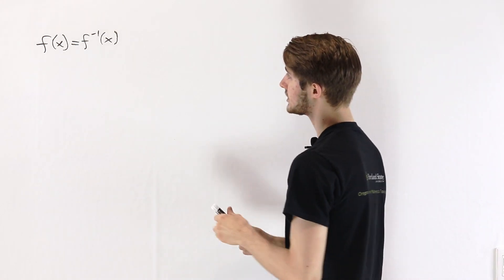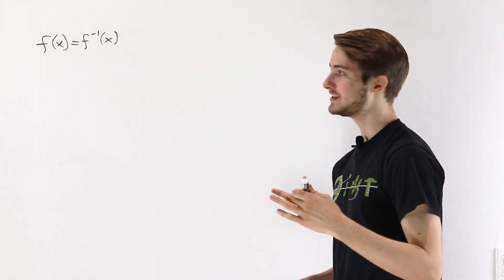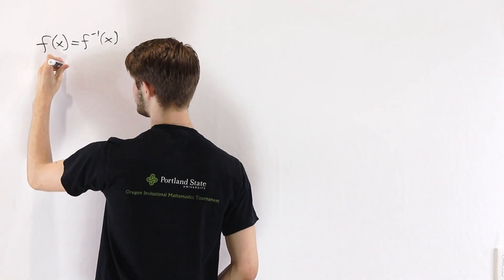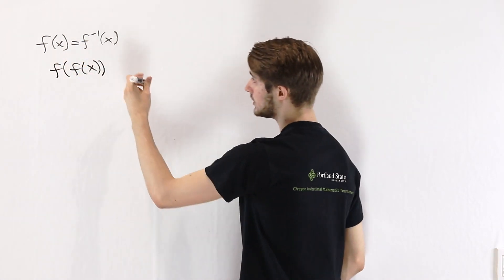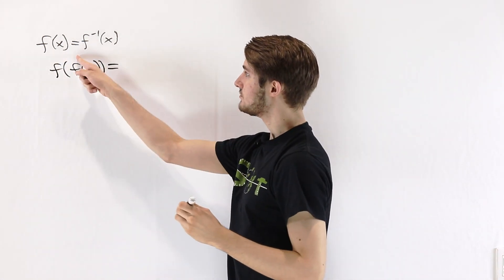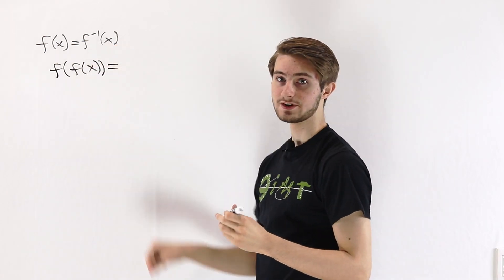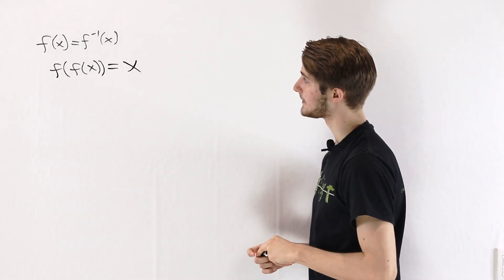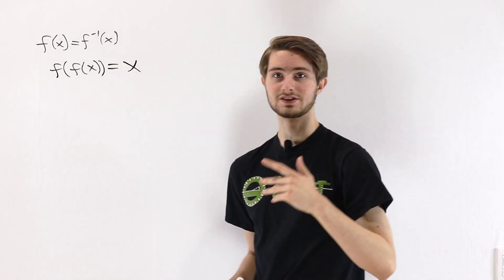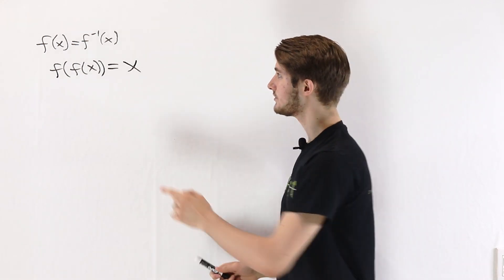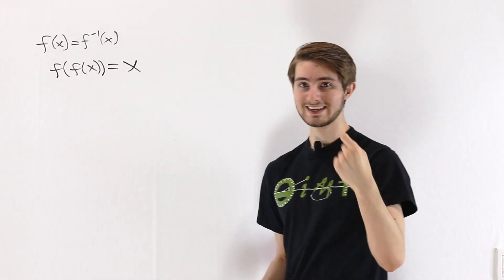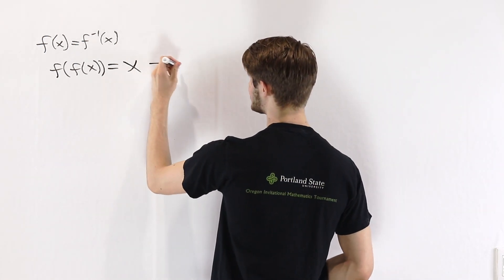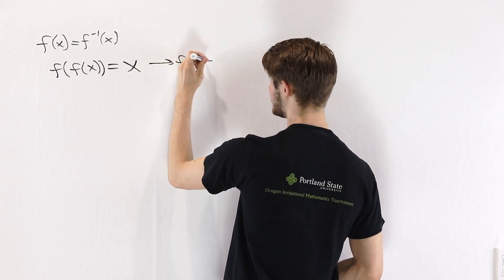To understand that, we're going to start by changing this equation a little bit. We are going to take f on both sides. If we take f on the left side, that leaves us with f(f(x)). On the right, we get f(f⁻¹(x)), and because this is the inverse, f of f⁻¹ just gives us the original argument x back. I'm going to propose that if our function f is strictly increasing, then the equation f(f(x)) = x implies that f(x) must equal x.